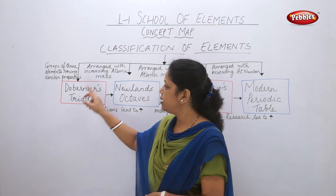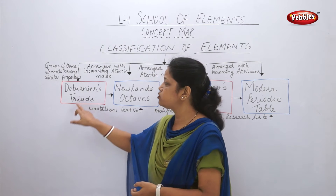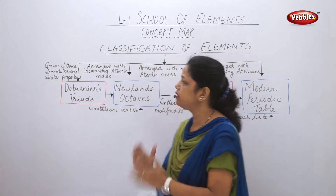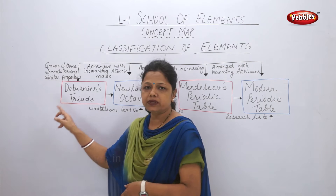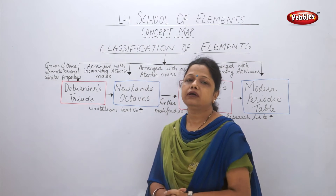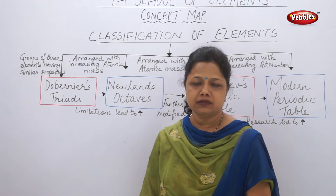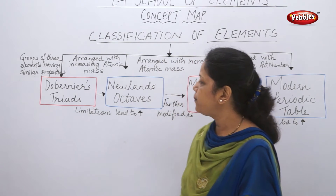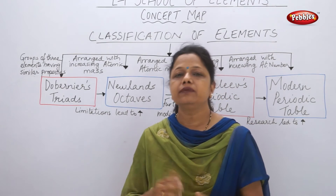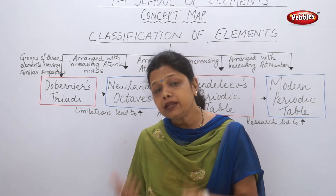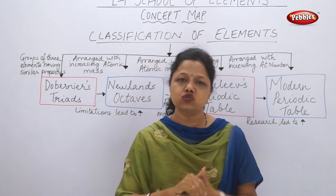Döbereiner said that whatever elements were present could be divided into groups of three, and therefore his classification was named Döbereiner's Triads — a group of three elements having similar properties. However, it was not very successful. Many elements were unknown, and those that were known could not be placed into the triads, so it was considered a failure.